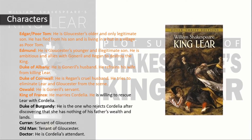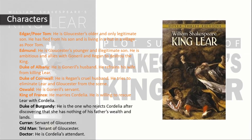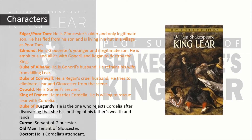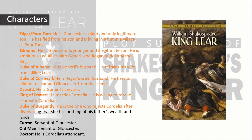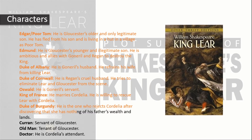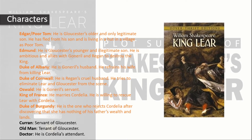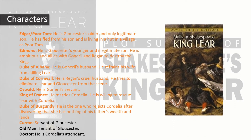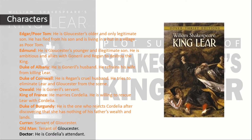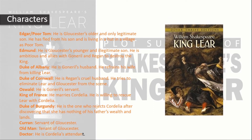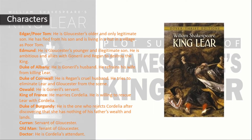The King of France marries Cordelia and is willing to rescue Lear with her. The Duke of Burgundy rejects Cordelia after discovering that she has nothing of her father's wealth and lands. Curran is a servant of Gloucester. The Old Man is a tenant of Gloucester. The Doctor is Cordelia's attendant.